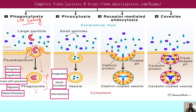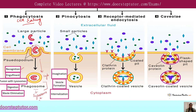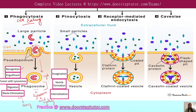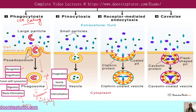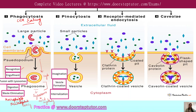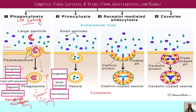The phagosome fuses with the lysosome. Lysosomes are acidic in environment and contain acidic hydrolase enzymes that help in digestion of the ingested material. After digestion, the waste is eliminated and expelled out of the cell via exocytosis. This phagocytosis mechanism is carried out by cells such as macrophages and neutrophils, which are called professional phagocytes because they defend the body against pathogens and eliminate old or damaged cells.